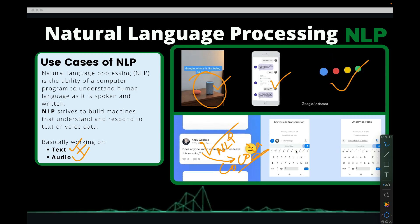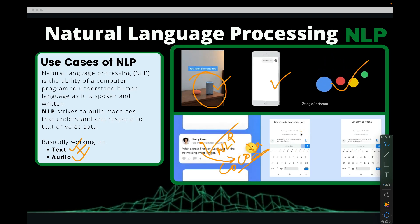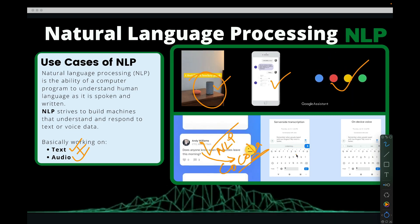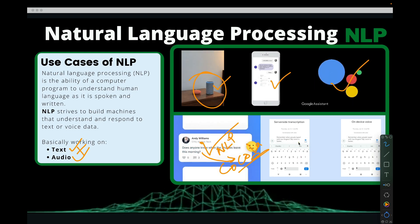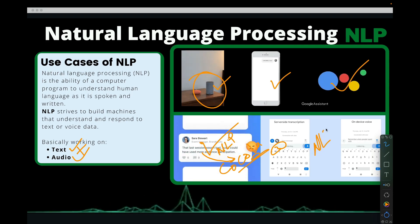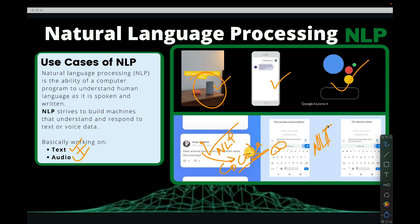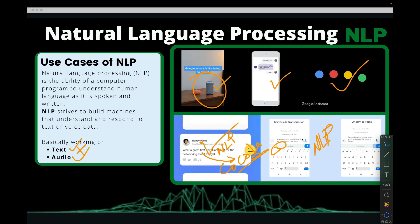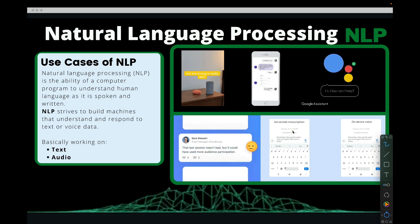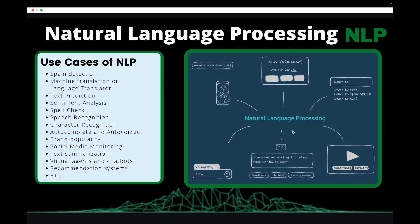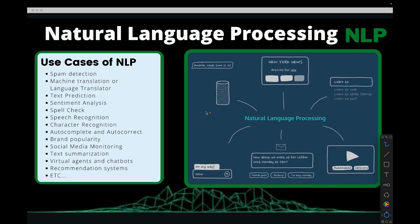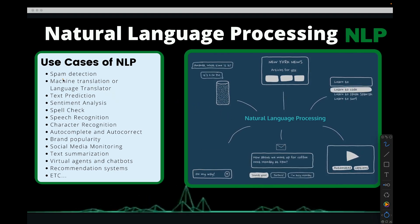If you think about auto-suggest, where you type something on your phone and you see that some words will be suggested for you — all of these are natural language processing that you see out there. You can actually think of quite a lot of use cases.